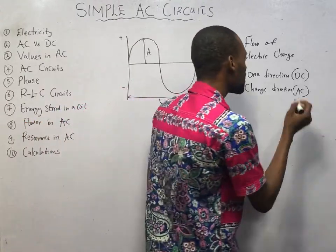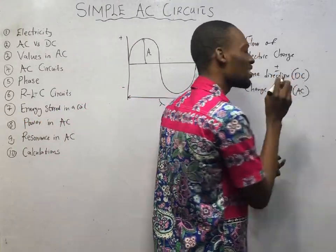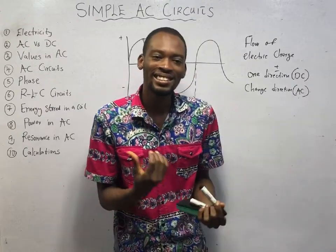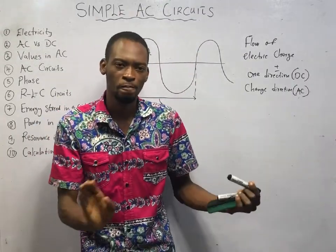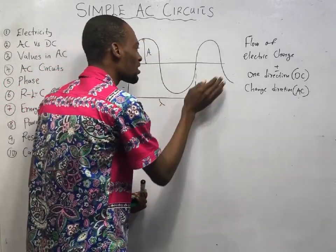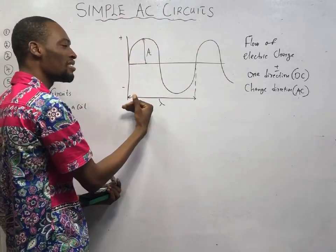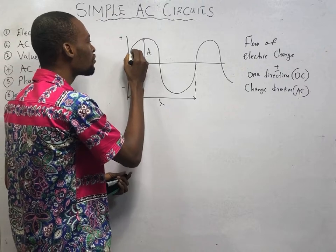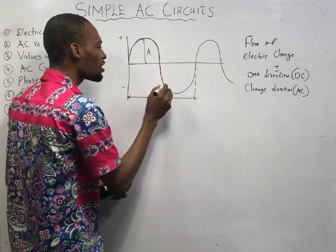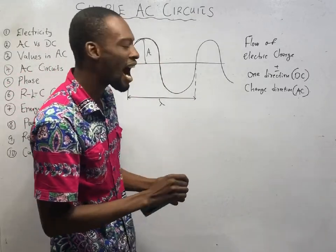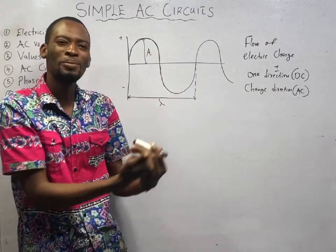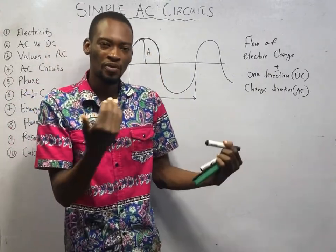For DC, here is positive or here is negative. On the other hand, alternating current is simply current that changes direction or polarity. Look at this sine wave. This is the positive half and this is the negative half. As this wave moves, here it is positive; as it goes down the other half, it becomes negative. This is simply how AC flows — it gets positive, it gets negative, it changes direction periodically.